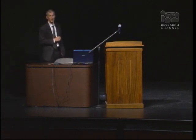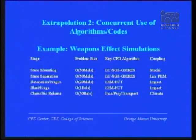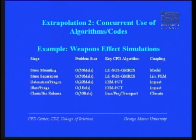Third extrapolation: we're going to use concurrently many algorithms and many codes. For example, if you want to simulate a bomb dropping all the way into a bunker, a bunker blowing up, nasty material inside, a cloud of toxic material propagating — you will have to use optimal algorithms for the fluid and for the coupling to the structure. This is not just for this application; it's going to span a vast range of applications. I've brought this up because it's a very visual example.